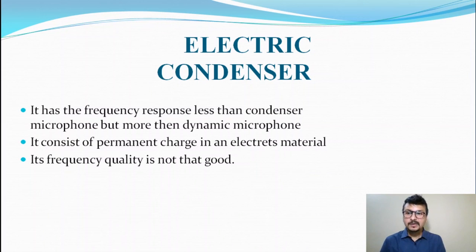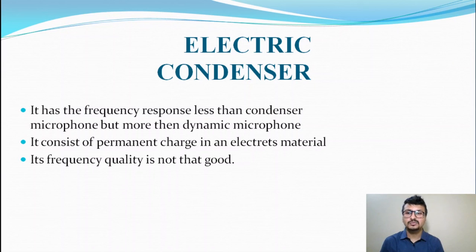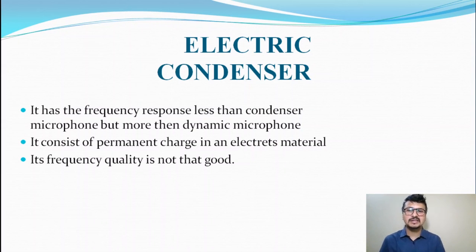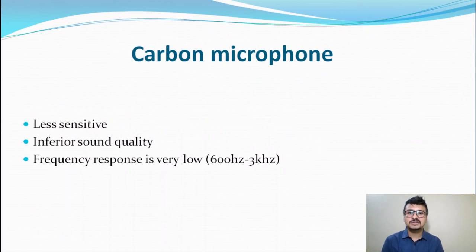The electret condenser microphone has a frequency response less than that of the condenser microphone, but more than the dynamic microphone — so it sits in the middle range between condenser and dynamic. It consists of a permanent charge in an electret material. Its frequency quality is not that strong, which is one of its drawbacks.